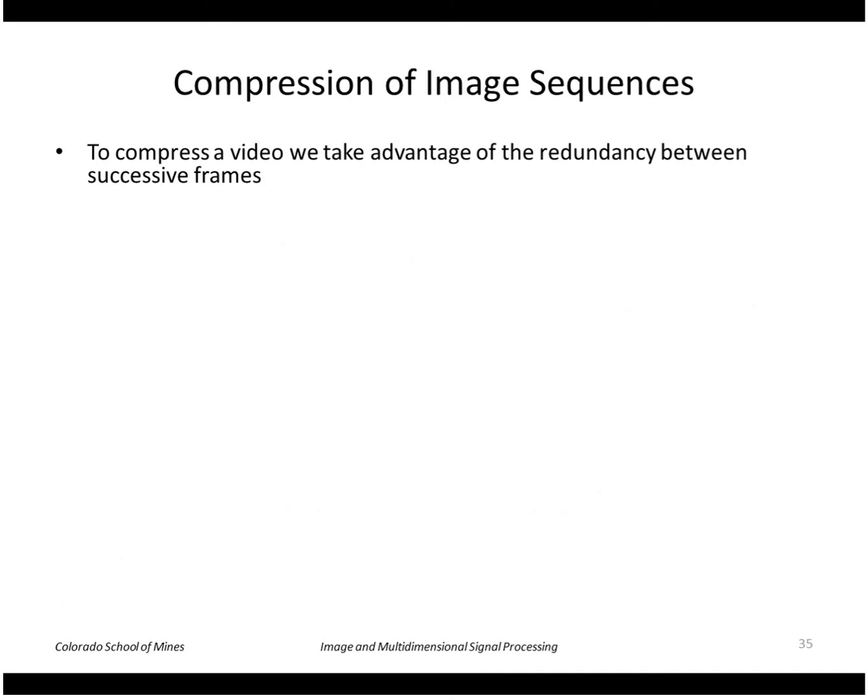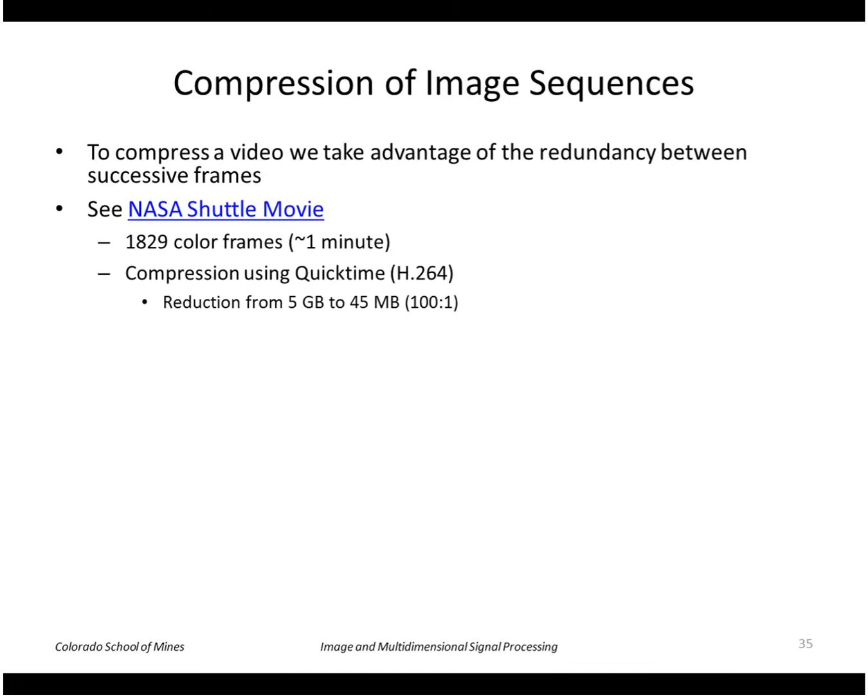Okay, finally I want to look at the compression of image sequences. This kind of uses about the concepts we've already seen for still images. But here we want to take advantage of the redundancy between successive frames, so temporal redundancy. So we expect that a pixel does not change that much from one image to another, and you can see that in this example.